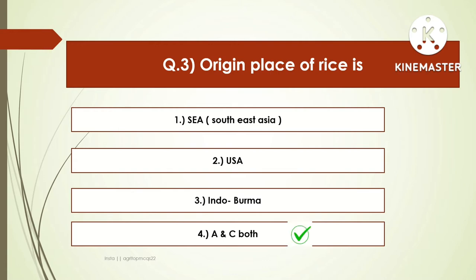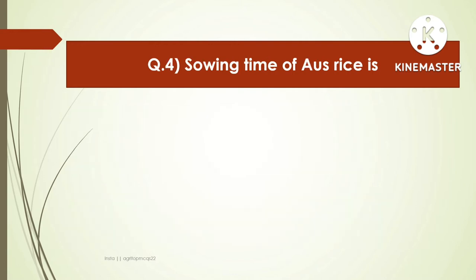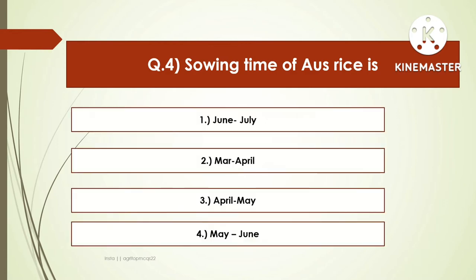The next question is: the sowing time of Aus rice is — options are June-July, April-May, or May-June. The right answer is May-June. The sowing time of Aus rice is May-June.